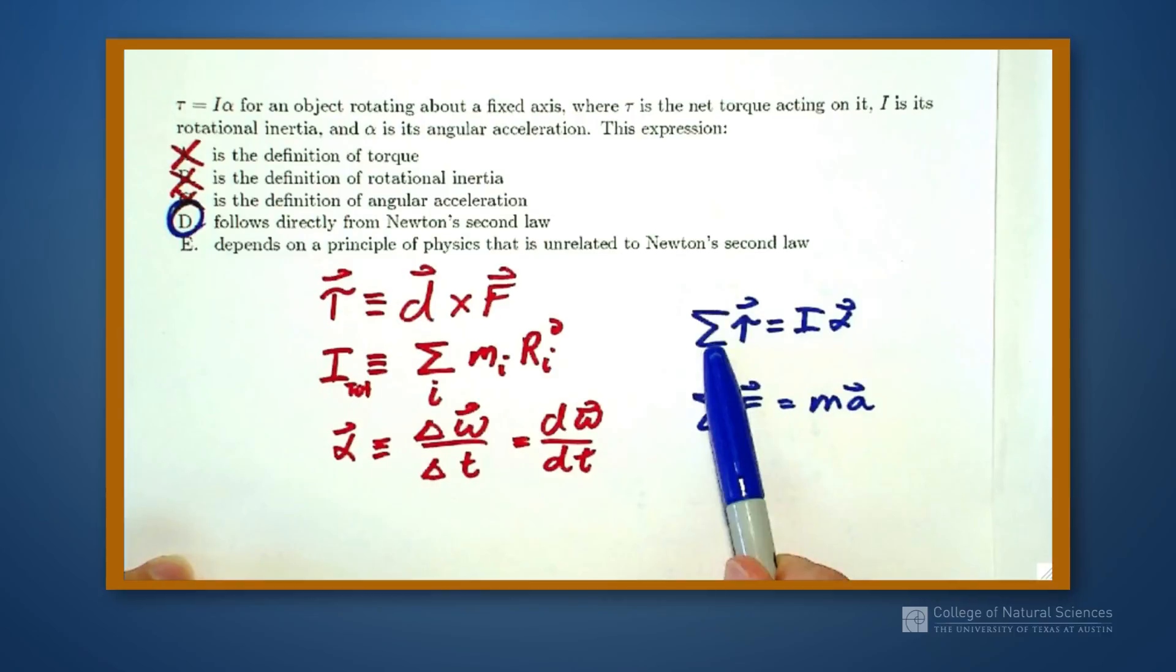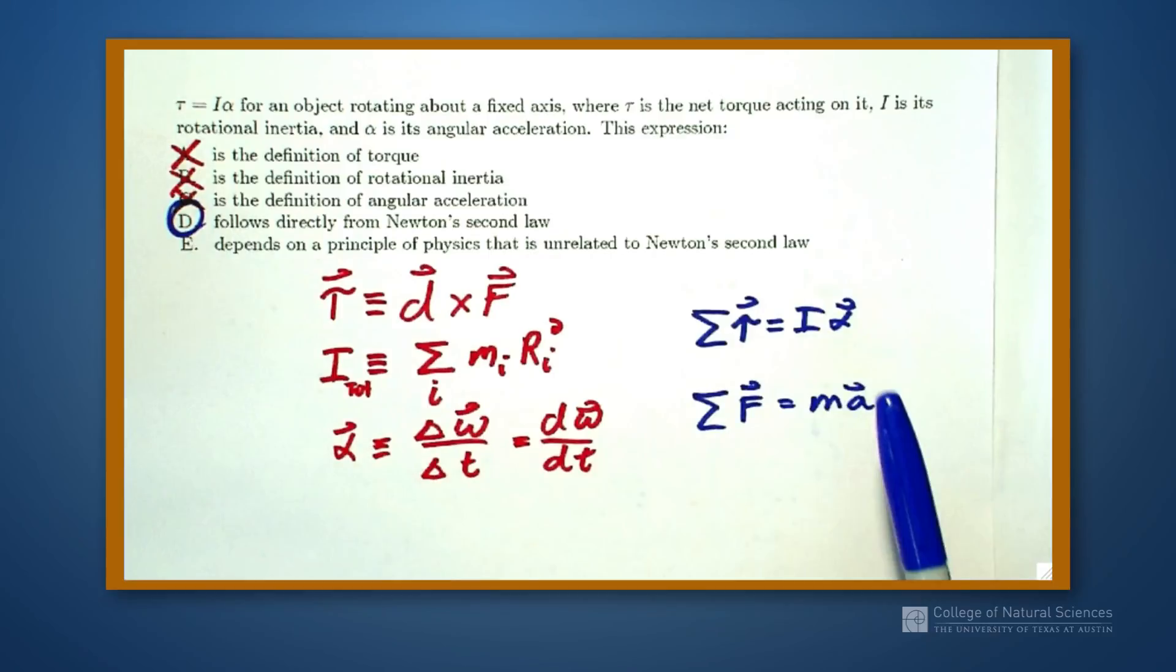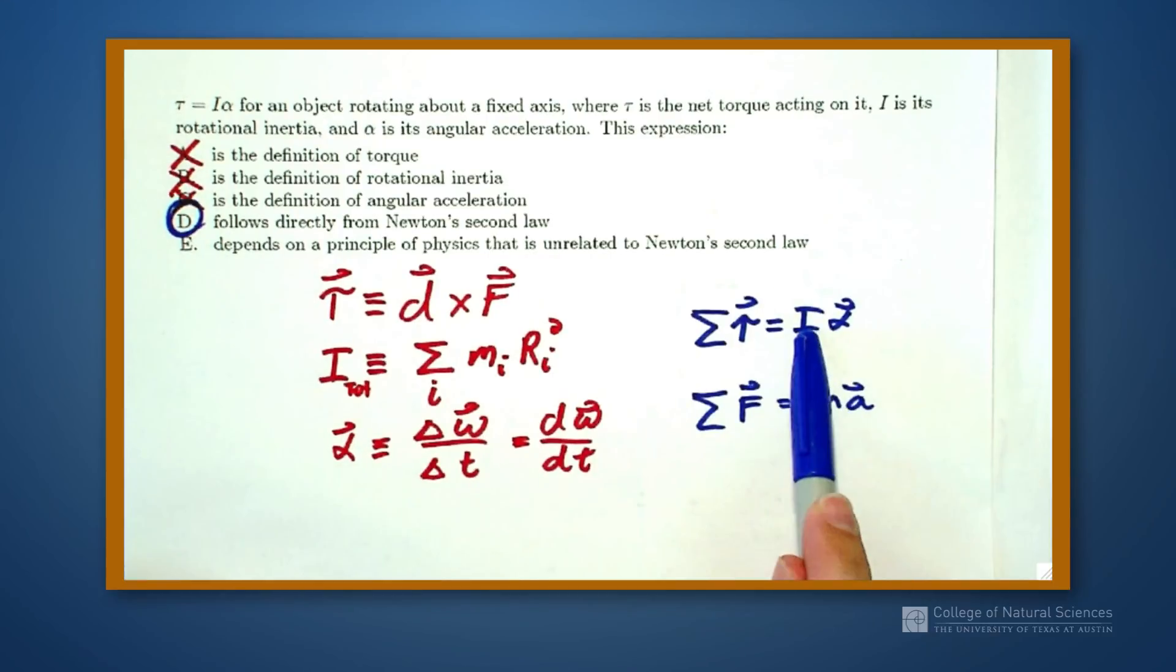So a net torque gives us an angular acceleration, a net force gives us a regular acceleration, and they have a proportionality constant that's related to how hard is it to rotate that object, its inertia, its mass or its moment of inertia.